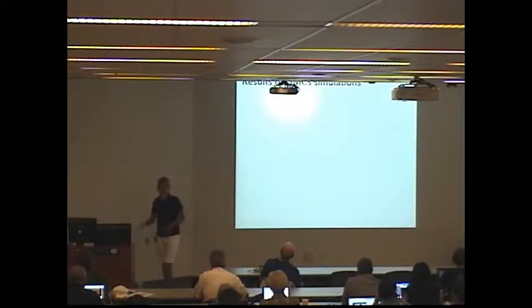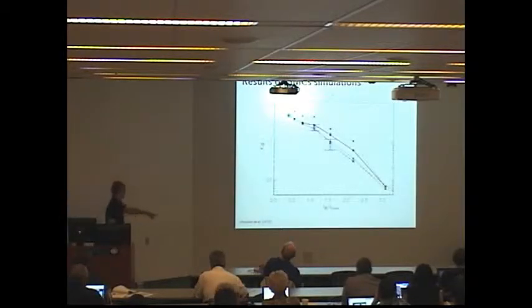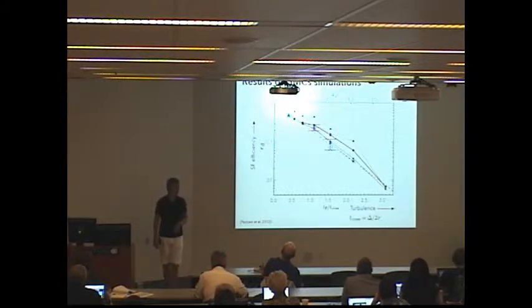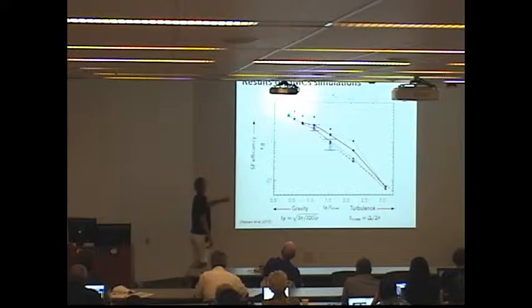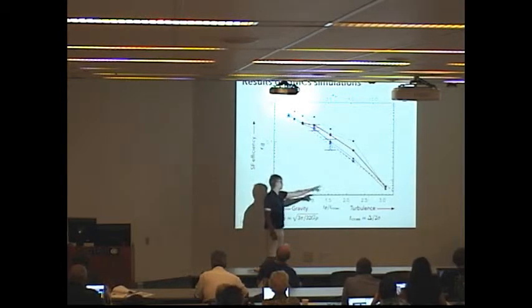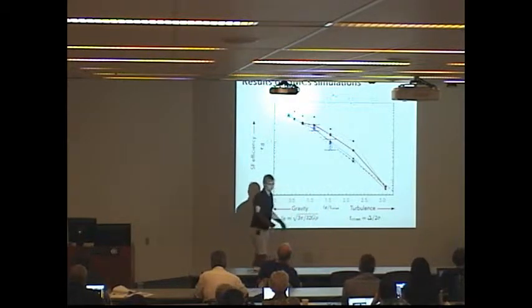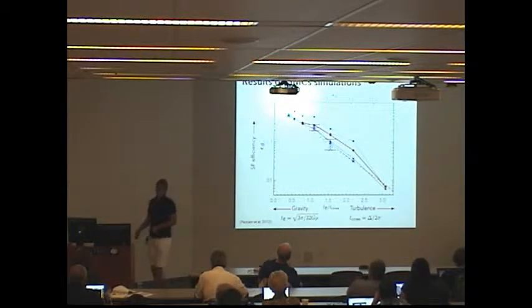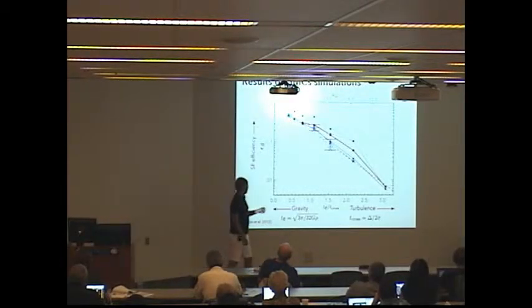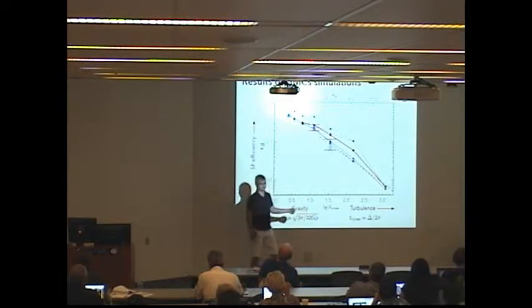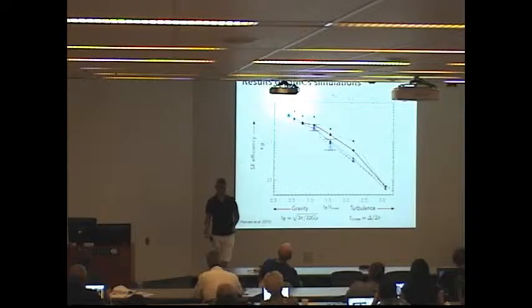However, simulations of such objects of GMCs can shed some light on this question. People basically just simulate supersonic turbulence in periodic boxes with high resolution. They add magnetic fields, they add self-gravity, and they mimic star formation as sink particles. They can just calculate how much mass is formed in these boxes and assign star formation efficiency for different conditions.